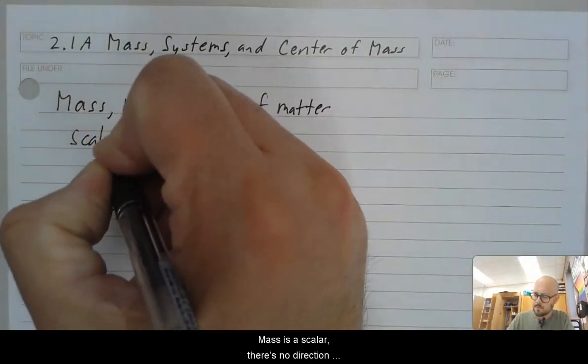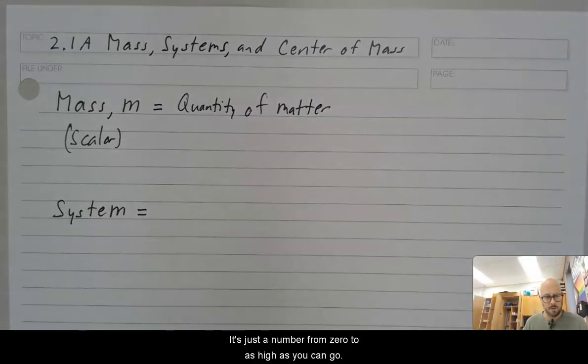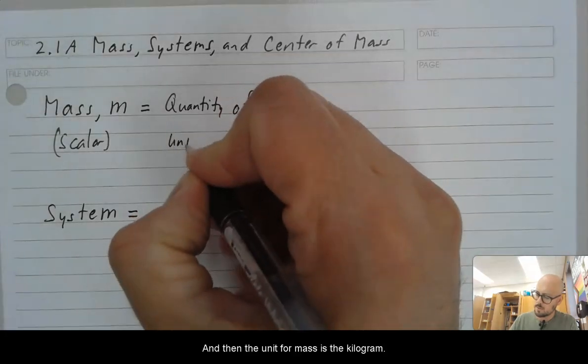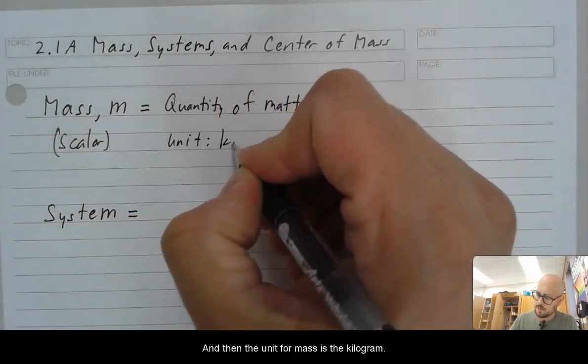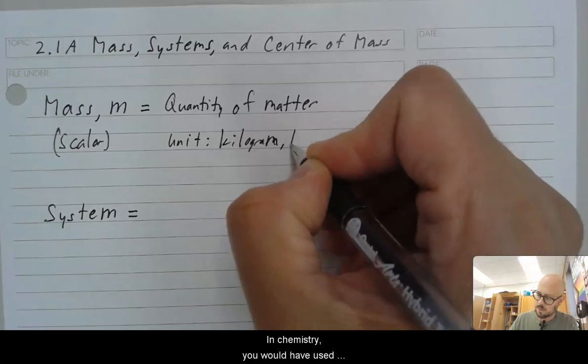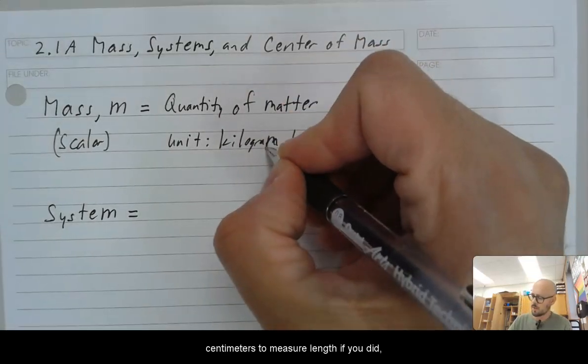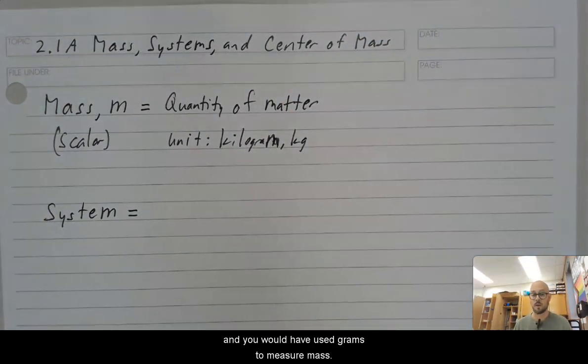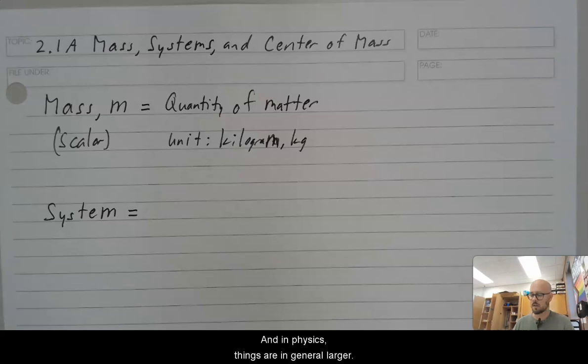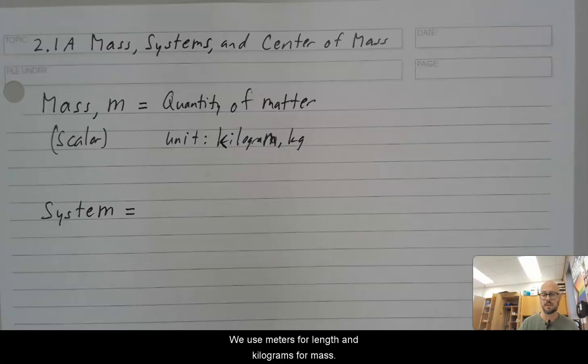Mass is a scalar. There's no direction associated with mass, it's just a number from zero to as high as you can go. And then the unit for mass is the kilogram. In chemistry you would have used centimeters to measure length, and you would have used grams to measure mass. And in physics things are in general larger, and so we just use larger units. We use meters for length and kilograms for mass.